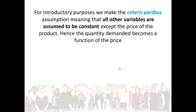In the real world, everything changes minute by minute. One minute your favorite beverage is Coca-Cola, and the next it is Stoney — meaning your preferences change. Or you might have a job with a big income, but get fired, then your income changes. So in reality, everything changes all the time. But because it is very difficult to take all the change into consideration, we assume that all other variables are constant and the only thing that can change is the price. For introductory purposes, we make the ceteris paribus assumption, meaning that all other variables are assumed to be constant except the price of the product. Hence, the quantity demanded becomes a function of price.